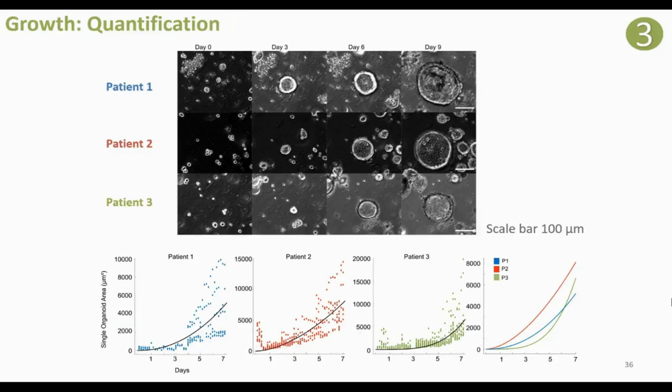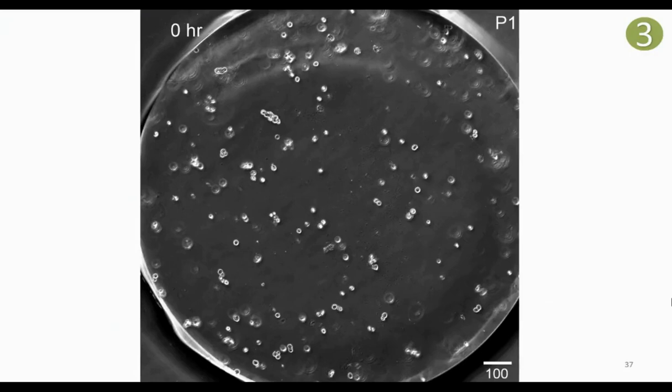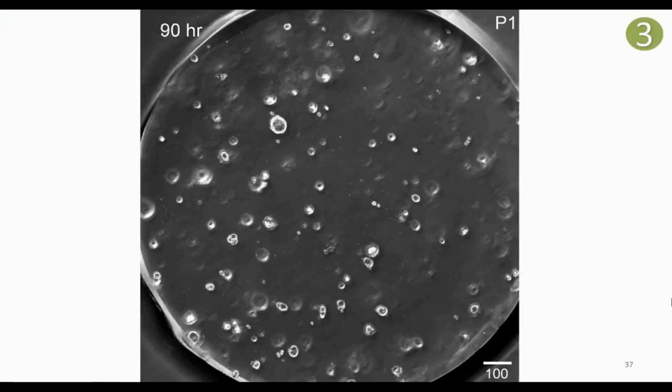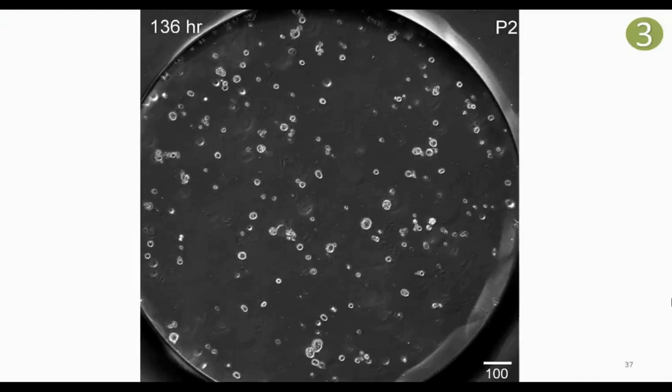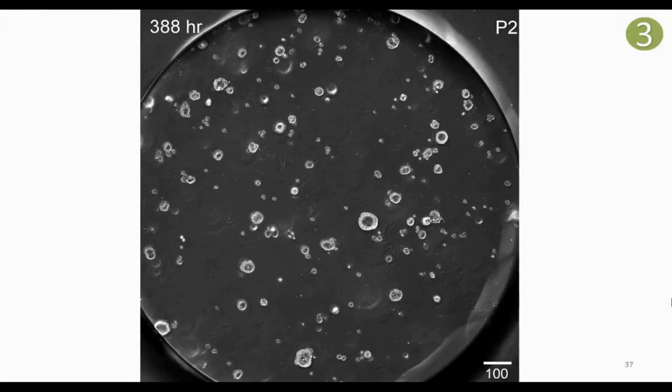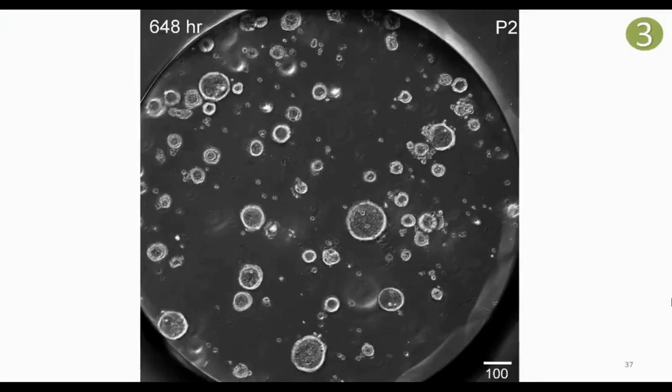Here's an example of an organoid growth video. We have patient one going from single cells to multicellular organoids — we can watch them grow. Here's patient two, and you can see a hydrogel bubble — the platform is designed to remove those so they don't affect our imaging. And then finally, patient three.